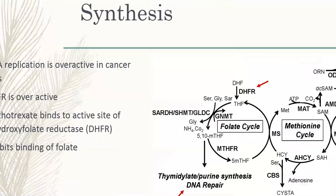DNA synthesis is overactive in cancer cells because they divide very fast and thus need a lot of nucleotides to compensate for this fast rate of cell division. The enzyme dihydrofolate reductase is necessary for the production of new nucleotides needed for DNA synthesis and repair. This pathway is overactive in cancer cells, while in normal cells it operates at a normal rate. The drug acts by inhibiting dihydrofolate reductase, leading to production of fewer nucleotides, reduced DNA replication, reduced DNA repair, and eventually cell death.